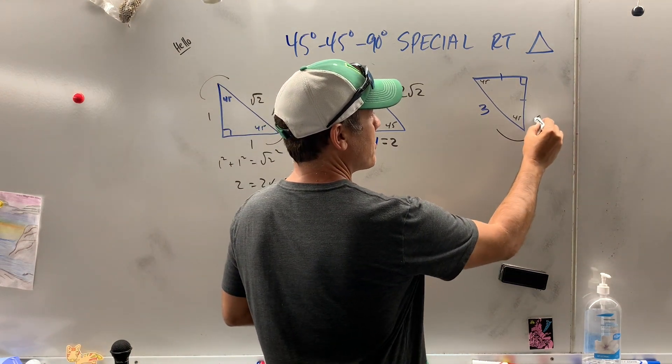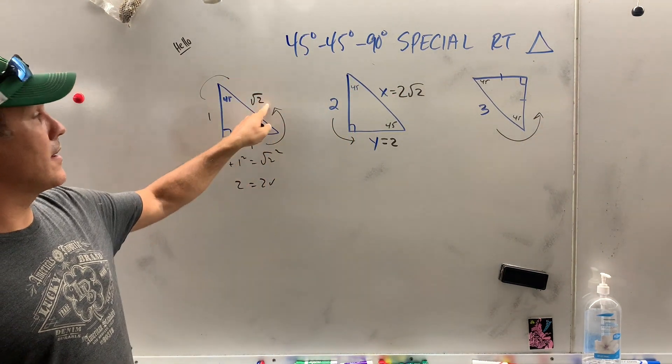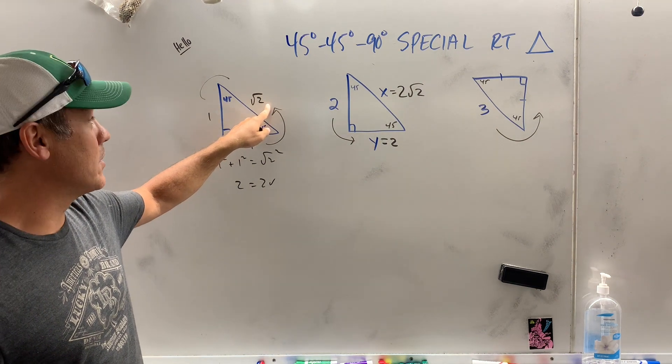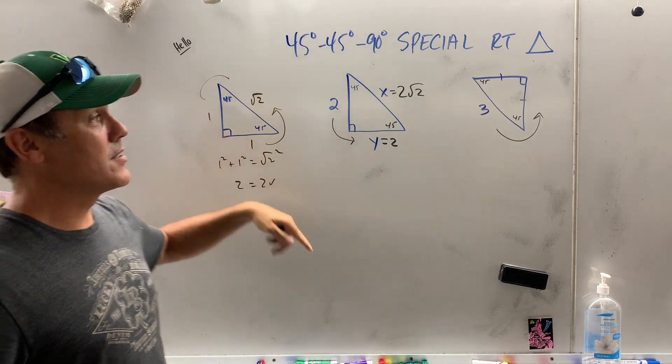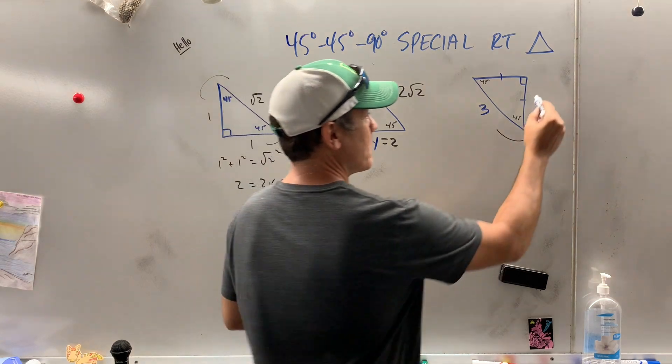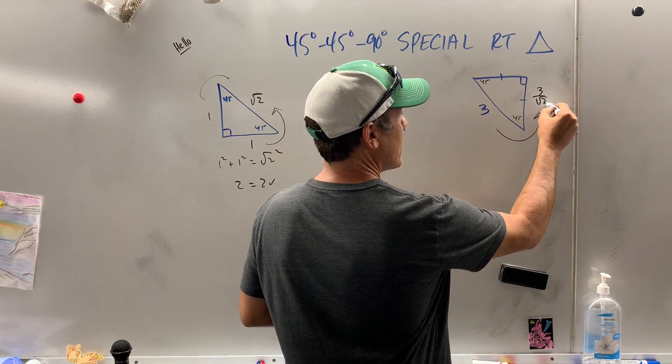Now, how do I go from here to here? Well, to go from here to here, I multiply by radical 2. So how do I go in reverse? Simply divide by radical 2. So this is 3 over radical 2.